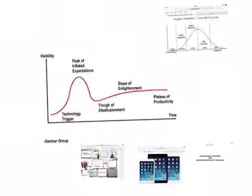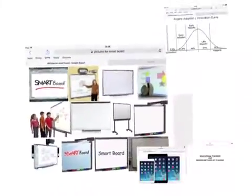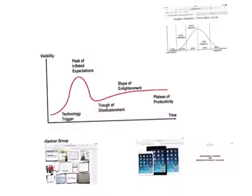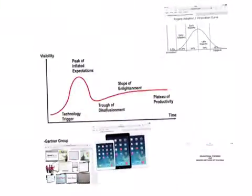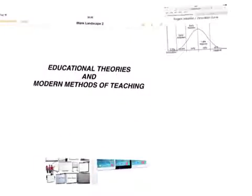The first category is the category which needs money and strong economy. This category includes the use of smart board and the use of iPad. While the second category, which doesn't need money, includes the use of educational theories and modern methods of teaching.